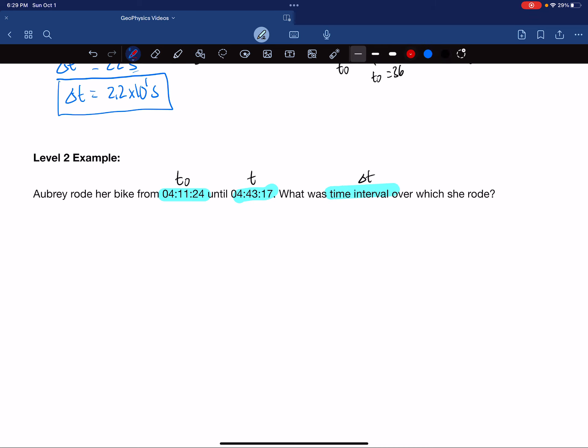We could draw a line to help us visualize this. We see 04:11:24, and then later 04:43:17. Time can progress only in one direction from smaller times to larger times, and we're looking for delta t.